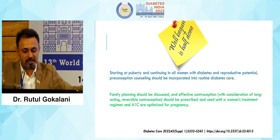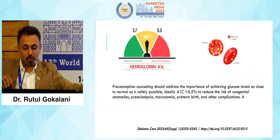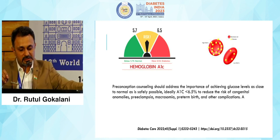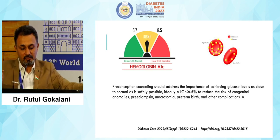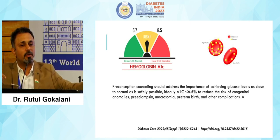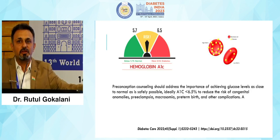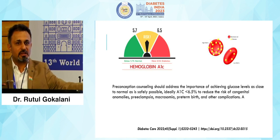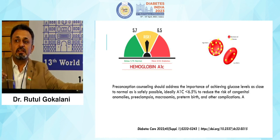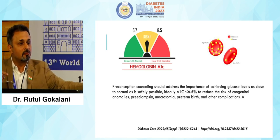Family planning should be discussed and effective contraception prescribed until the women's treatment regimen and HbA1c are optimized for pregnancy. The goal of preconceptional counselling is achieving glycemic levels as close to normal as safely possible. With molecules like GLP-1 receptor agonists, SGLT-2 inhibitors, metformin, and pioglitazone — which do not cause apparent hypoglycemia — we can achieve HbA1c less than 6.5%, and even target less than 6%, which can be beneficial for the baby.